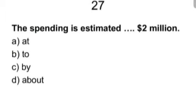Twenty seven. The spending is estimated blank two million. Dollar two million dollar, add, to buy, about. Add, to buy, about. Answer is add.